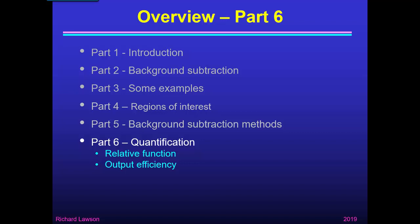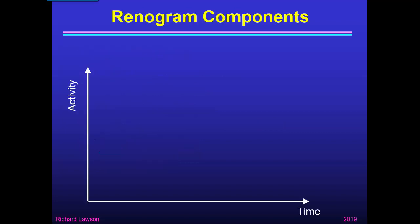In particular, to calculate the relative function of each kidney and their output efficiency. If we look at the components that make up the renogram, if we plot activity against time, first of all we have an uptake component representing activity that's come into the kidney. That is a rising curve which gently flattens off. The rate at which it rises depends on how much there is in the blood. So early on when there's a lot in the blood it rises quickly, and as the blood activity decreases it rises less quickly.